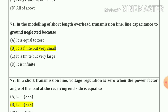Question number 71: in the modeling of a short length overhead transmission line, line capacitance to ground is neglected because it is finite but very small — option number B.